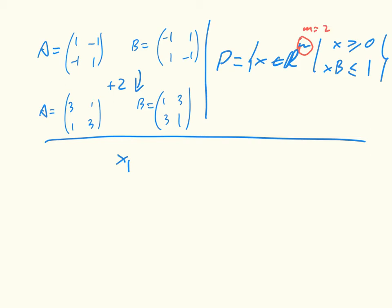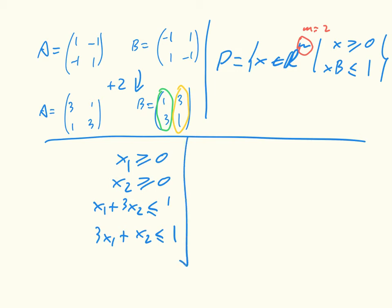So X1 is greater or equal to zero. X2 is greater or equal to zero. And now we have to multiply X by B. So we're going to multiply X by the columns of B to get the utilities. So we just have X1 plus 3X2 is got to be less than or equal to 1. And 3X1 plus X2 is got to be less than or equal to 1. So this defines our polytope.